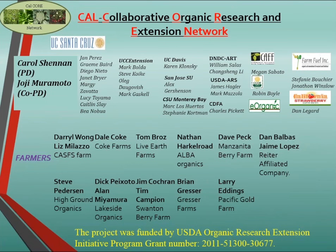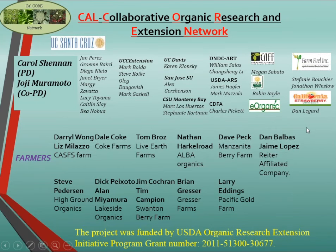That was the focus of the CALCOR project funded by the OREI program in 2011. The network includes researchers, UC Extension, researchers from other institutions, nonprofits like CCOF, Community Alliance with Family Farms, industry partners including Farm Fuel Incorporated and the California Strawberry Commission, as well as farmers who are collaborating on the research in a variety of ways.